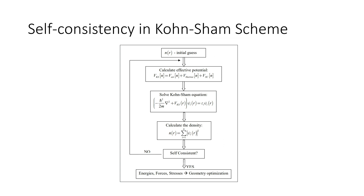In summary, you guess an initial electron density, solve all of these equations, and then calculate the electron density. If this density equals the initial guess, there is self-consistency in the Kohn-Sham scheme. If not, you change the initial guess and repeat until convergence. The electron density at convergence is the true ground state electron density, from which all ground state properties of the system can be calculated.